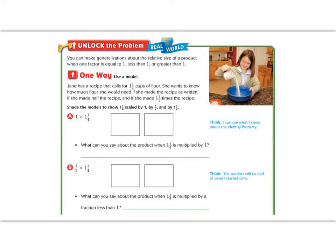Let's show this with a model. Jane has a recipe that calls for one and one-fourth cups of flour. She wants to know how much flour she would need if she made the recipe as written, if she made half the recipe, and if she made one and a half times the recipe. First, let's show one times one and one-fourth. She's going to use one whole cup of flour, split into fourths, and use one of the fourths. So we know if we're going to use one group of one and one-fourth, it is going to be equal, because nothing changed.